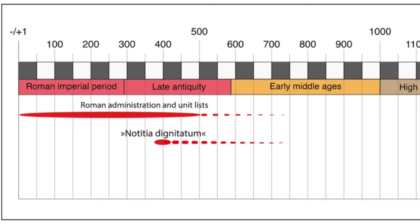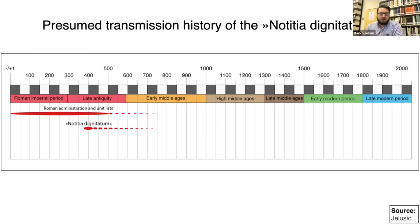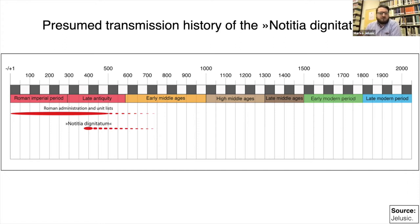The Notitia Dignitatum goes back to this high-ranking late Roman office system and state organizing system on which the document is based. The text we are working with today dates to around the year 400 AD, beginning a couple of years before 400 and extending to the 420s AD. For this document we do not know its correct purpose — we do not even know whether it was a gift, a teaching book for a young Roman emperor, or something else.